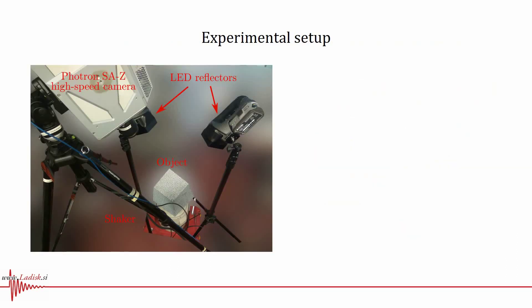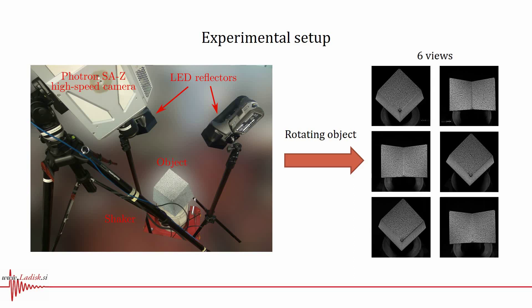In our validation experiment, the specimen was a triple planar cubic shell excited with a stationary random broadband profile on an electrodynamic shaker. The observed object was rotated to capture six different views of the process. Six separate one-second videos of the stationary vibration were acquired at 20,000 frames per second using a Photron high-speed camera.